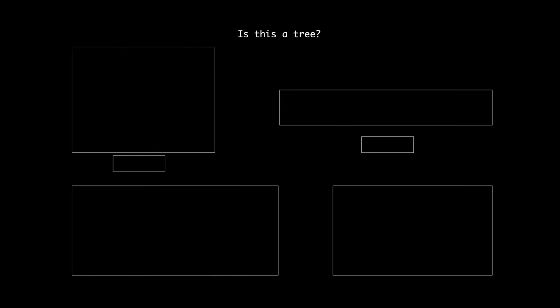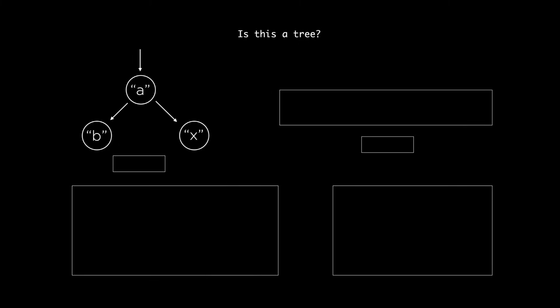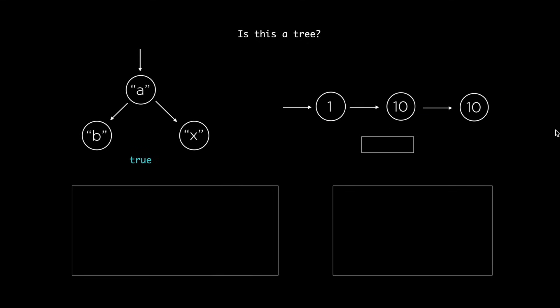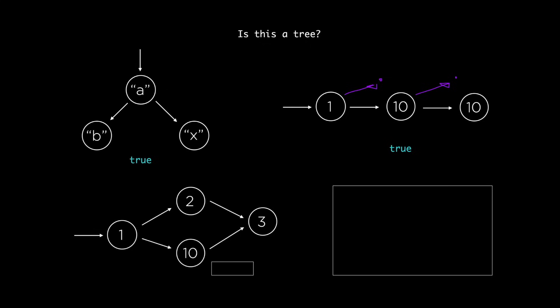To help you understand what a tree is exactly, we're going to play a little game called 'Is this a tree?' I'm going to show you a structure and you just need to answer if it's a tree or not. This one doesn't have integers inside, it has strings, but of course it's still a tree. And what about this one — well it's a linked list, but it's also a tree. Each node could have multiple children, it just doesn't, so it's a boring example but technically it's also a tree.